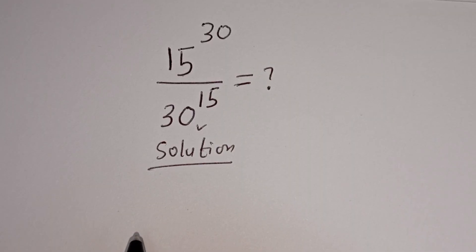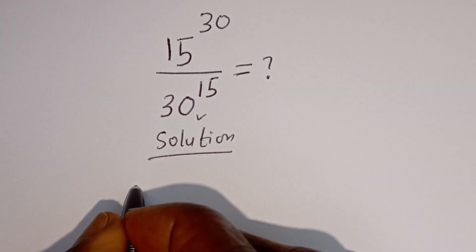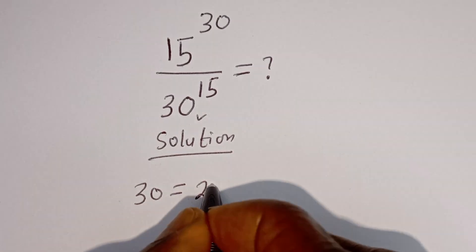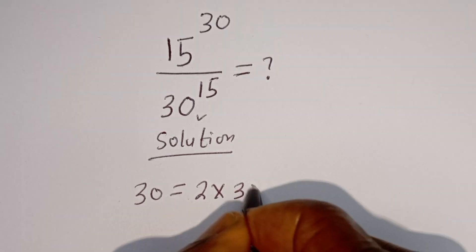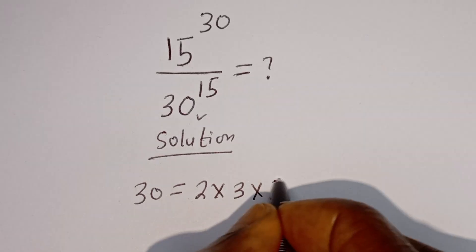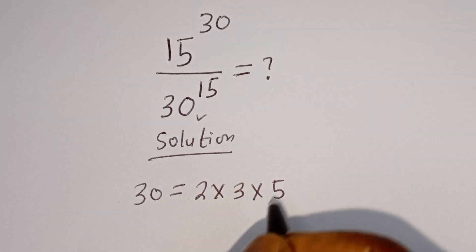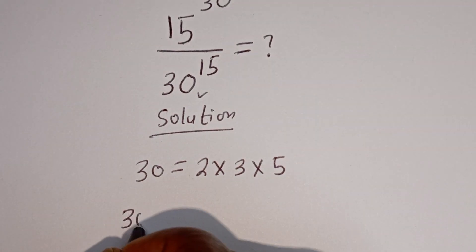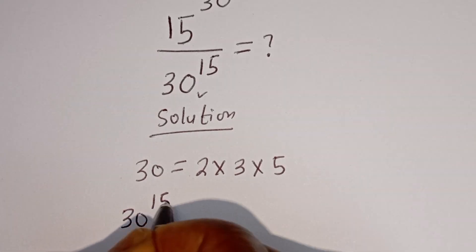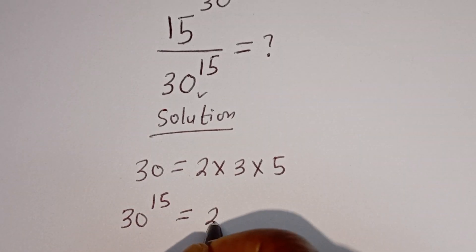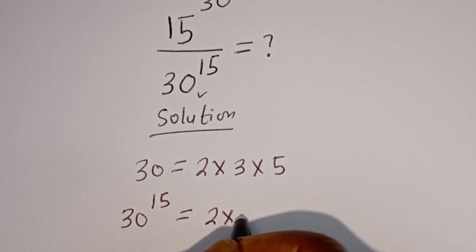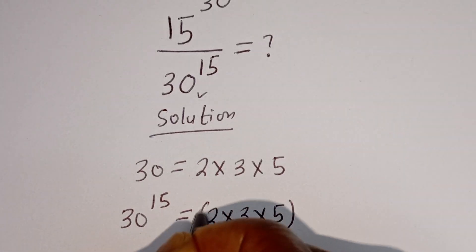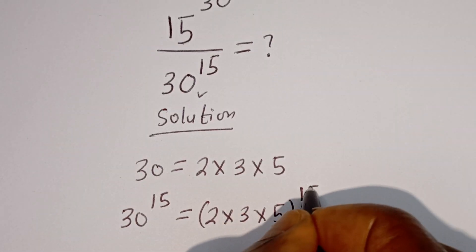From here, we know that 30 is equal to 2 multiplied by 3 multiplied by 5. Therefore, 30 to the power of 15 is equal to 2 multiplied by 3 multiplied by 5, all to the power of 15.